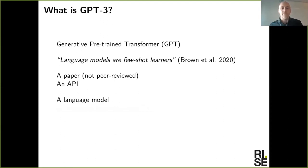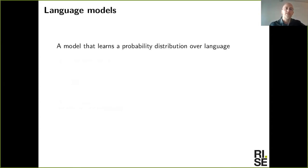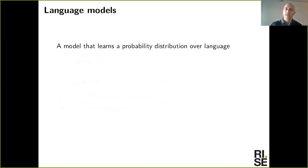GPT-3 is a language model — a computational model that learns a probability distribution over language. This can be done in many ways. The earliest language models were quite simple probability-based models, and nowadays we almost exclusively use neural networks to build language models, which we call neural language models.